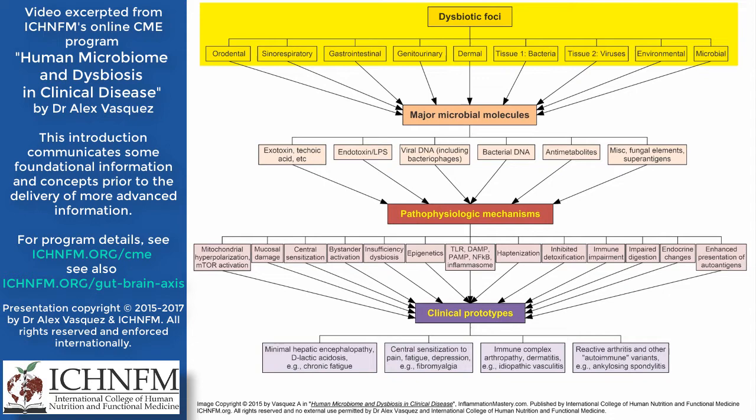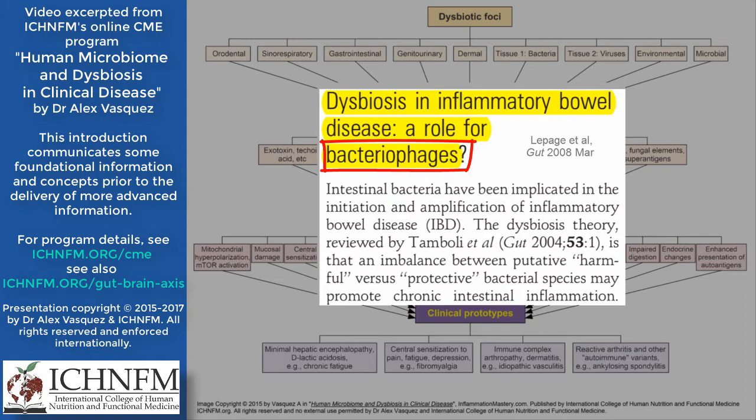We can also talk about environmental exposure to microbial components — what I call environmental dysbiosis. We can also consider microbial dysbiosis to represent microbial infections of other microbes, one relevant example being the infection of bacteria by viruses. Bacteriophages are viruses that only infect bacteria, and we're seeing in current research some conversation about alterations in the virome of bacteriophages associated with certain diseases such as lupus and inflammatory bowel disease.